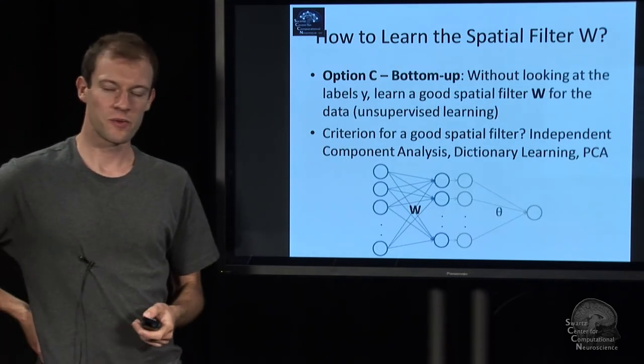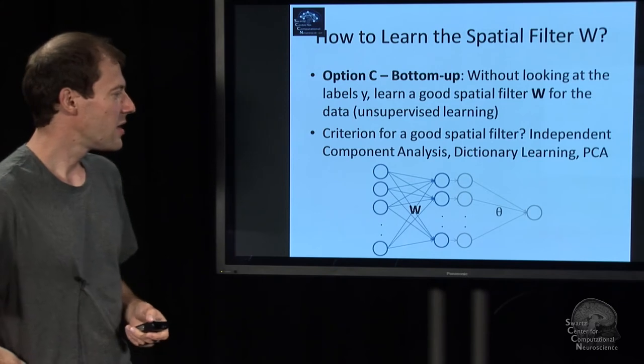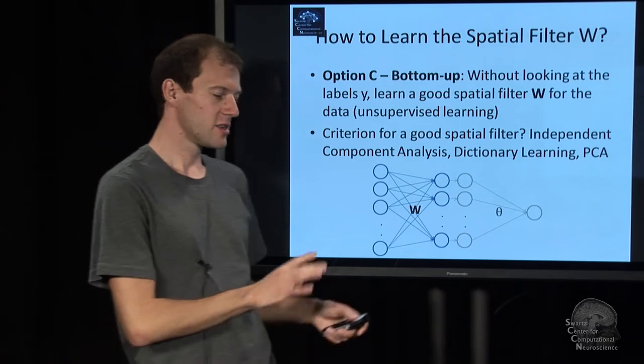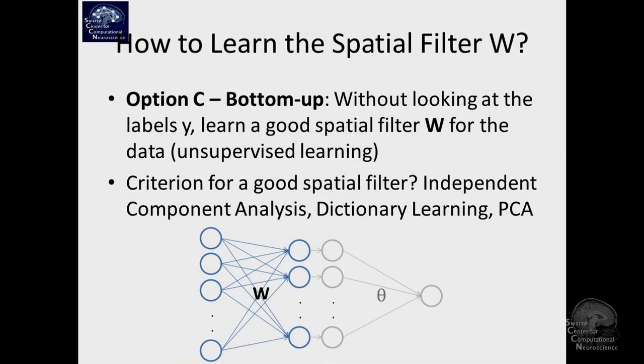There's another one, which is, well, we're not trying to even look at the labels. We're completely ignoring task parameters and whatever. We're just looking at the raw data, and we're just trying to learn the W from the raw data. And that would be unsupervised learning. We're not looking at labels.